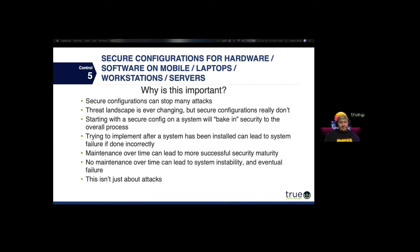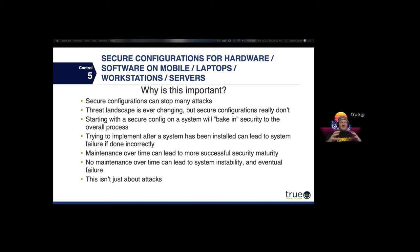Secure configurations can stop a whole lot of attacks. Your threat landscape changes a lot, but your secure configurations really don't. Resources include NIST configurations, DoD STIGs, CIS hardened images for cloud-based services, and OpenSCAP. Starting with a secure configuration bakes security into the overall process. Trying to implement security after something's been installed can make things go seriously wrong — if you apply a STIG incorrectly, it can totally fry your system and require a rebuild from scratch. Maintenance over time leads to more successful security maturity.